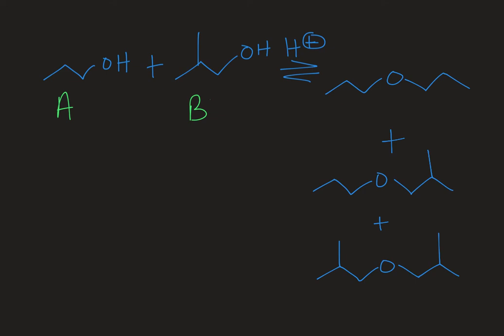So I've labeled my alcohols as A and B. The top product is the combination of an A with an A. The middle product is a combination of an A with a B. And it doesn't matter if A or B comes first, that's just kind of flipping the molecule 180 degrees. And then the bottom molecule would be a B with a B.